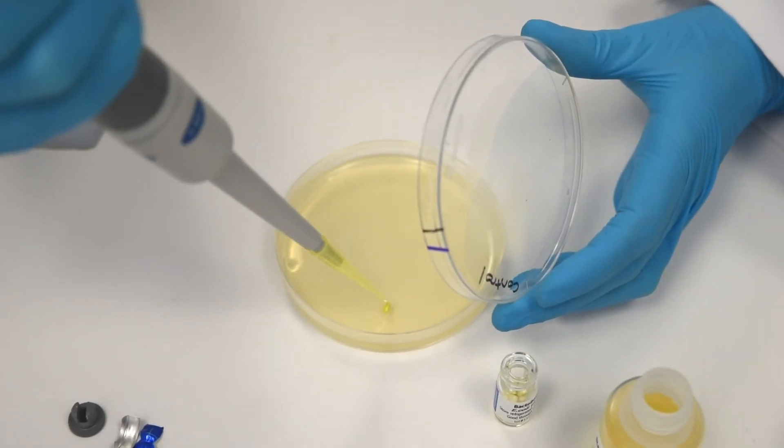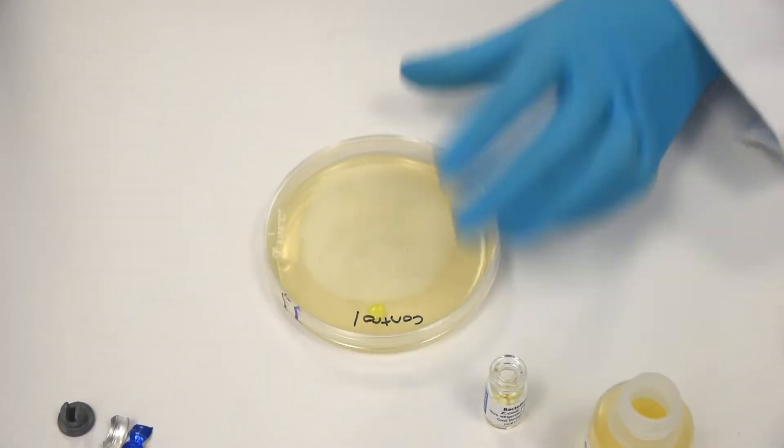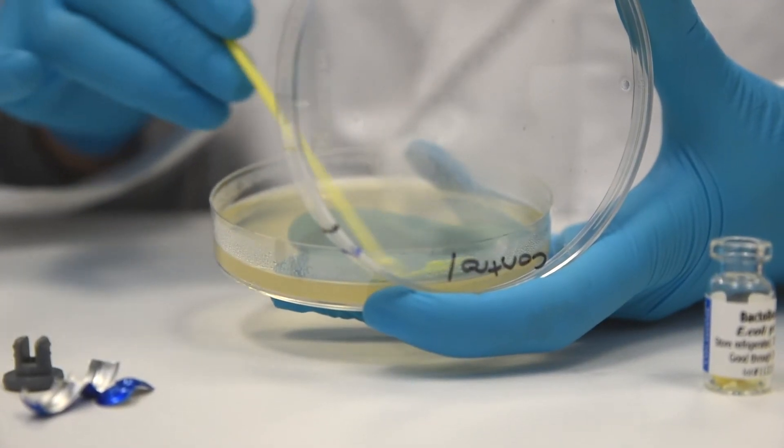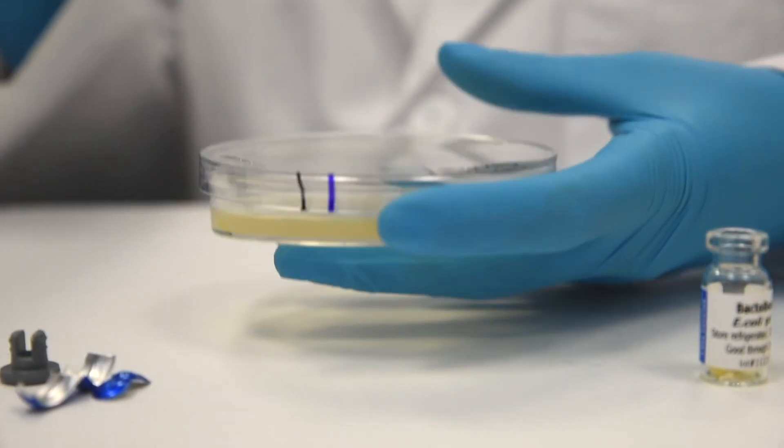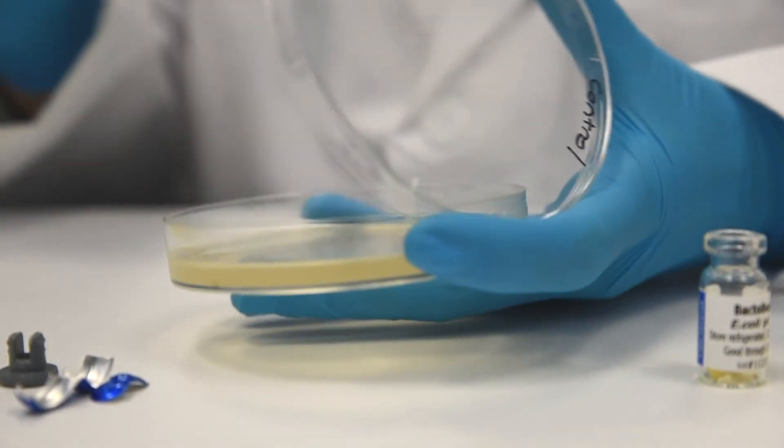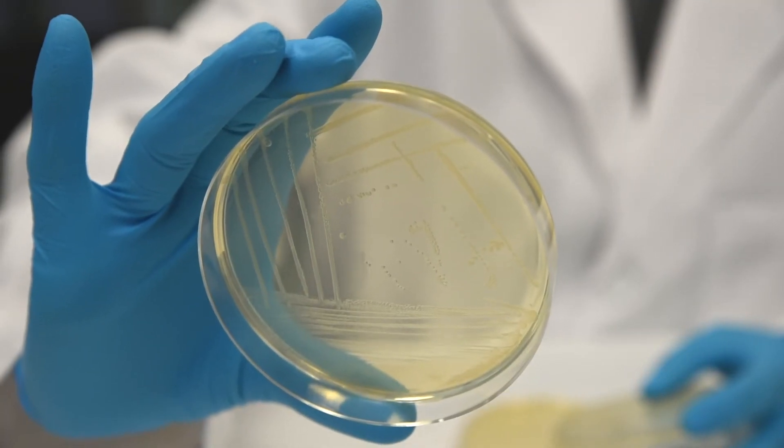These control GFP plates will be used in Module 2 if transformation is unsuccessful. They should be prepared ahead of time, incubated at 37 degrees Celsius overnight, and stored at 4 degrees Celsius until needed.